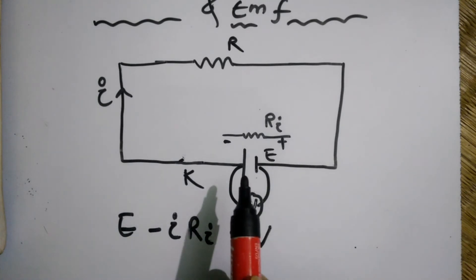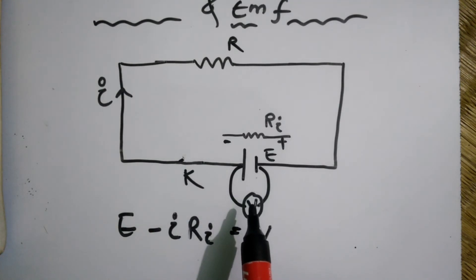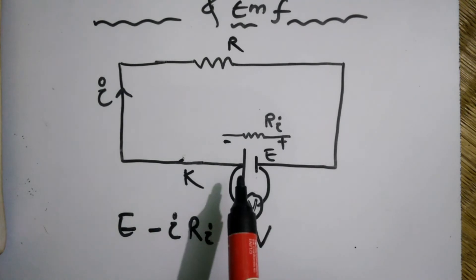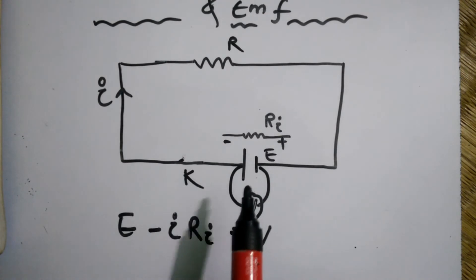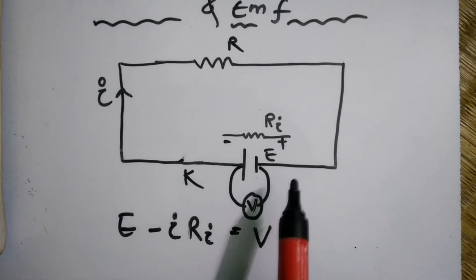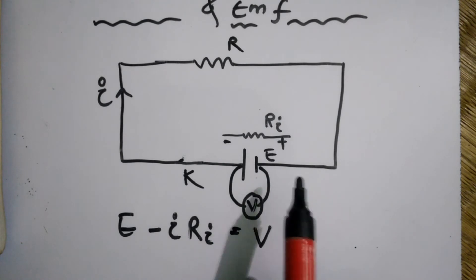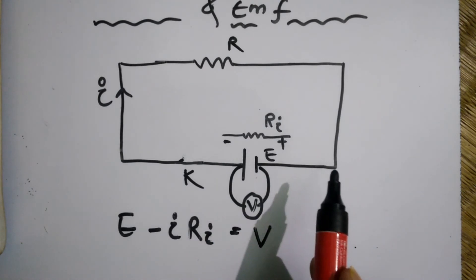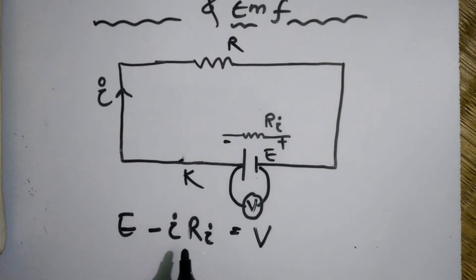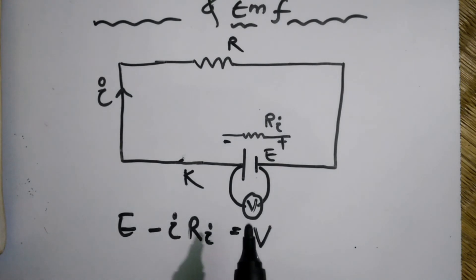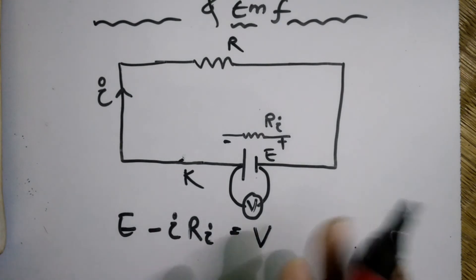The potential difference is the voltage across the two terminals of the battery or cell whenever the circuit is closed. That is the basic difference between potential difference and electromotive force. Both have the same unit — volt — but that distinction is the fundamental difference.